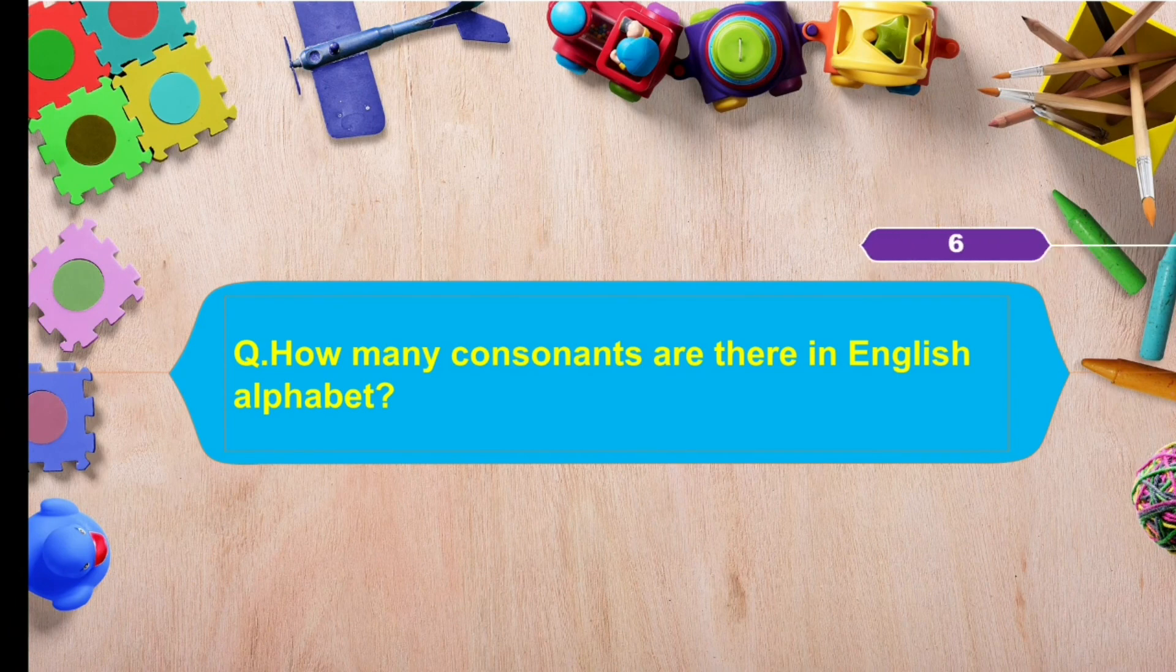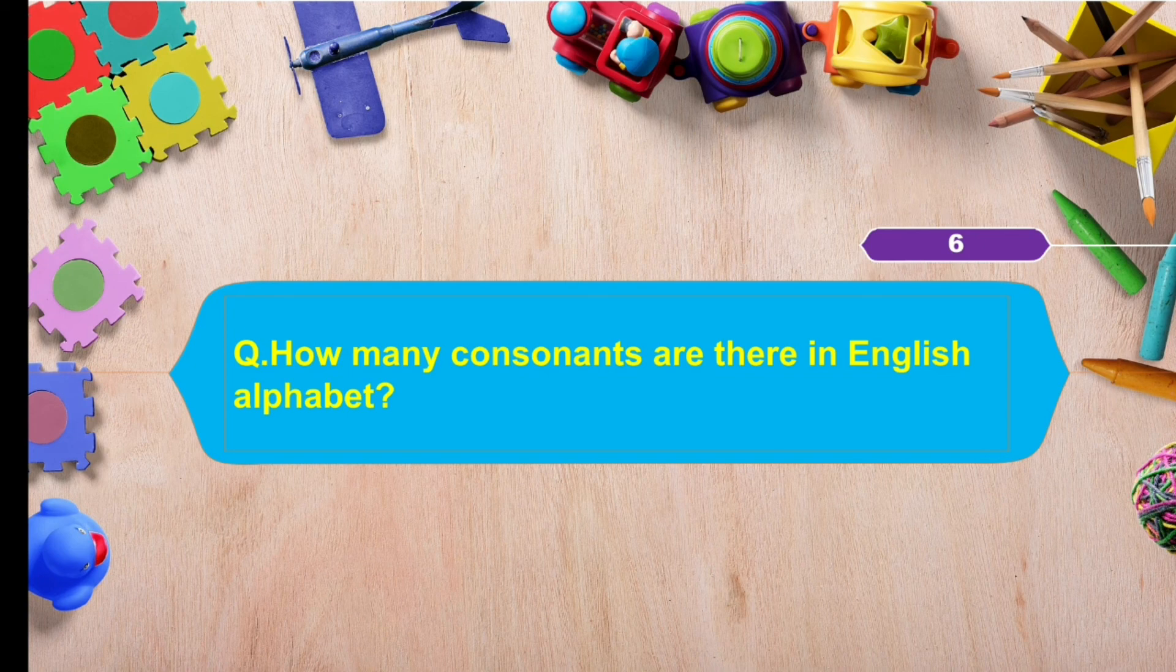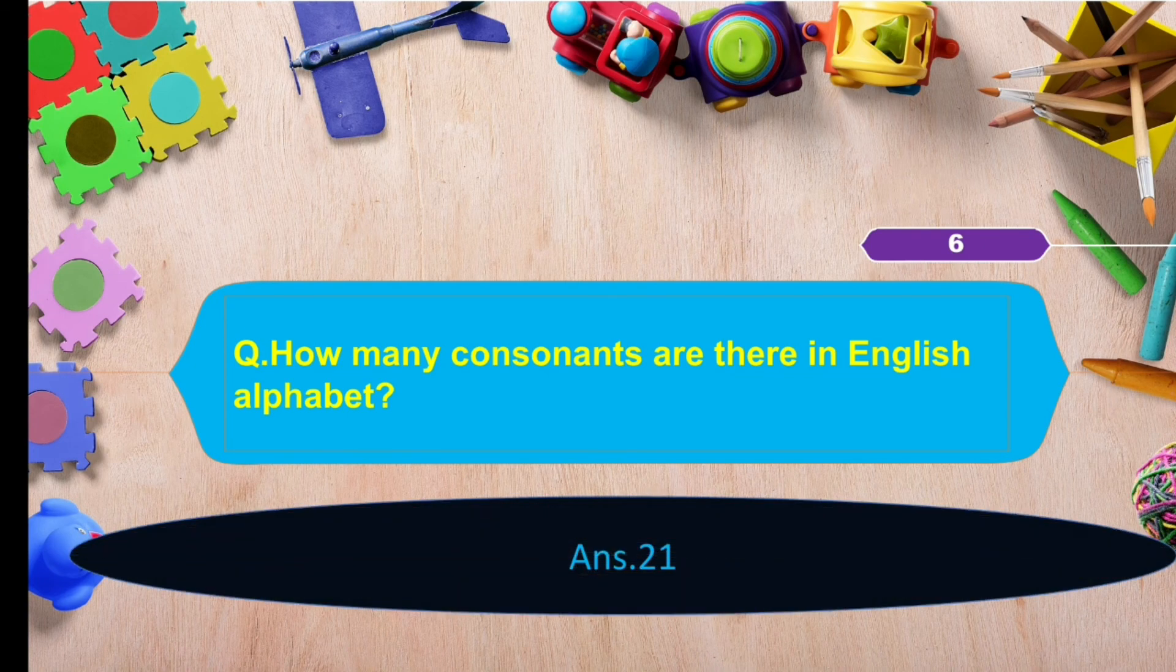How many consonants are there in English alphabet? And the answer is 21.